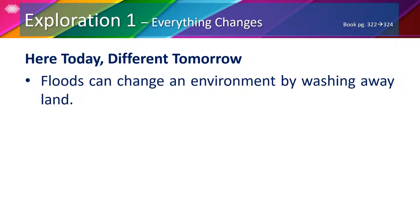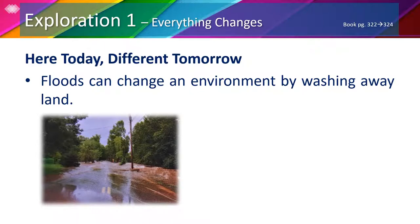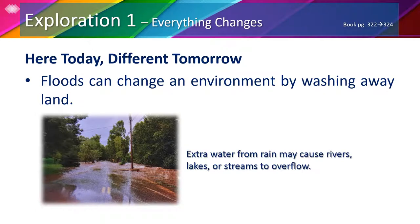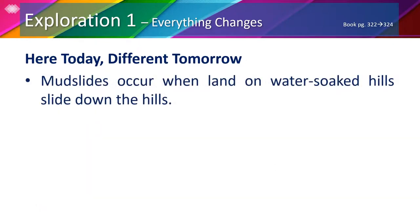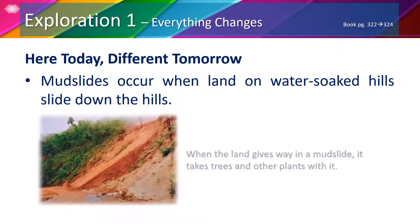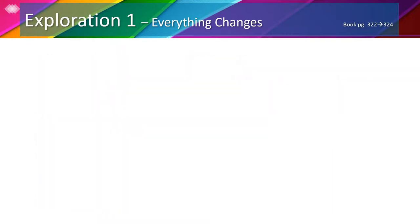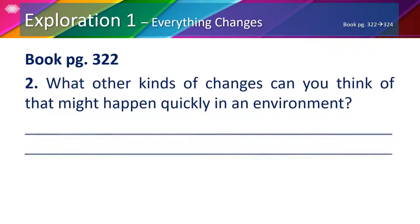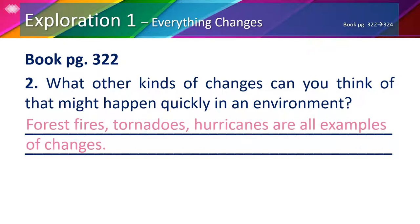Floods can change an environment by washing away land. In your book, page 322, we can see a picture of a road flooded with water. Extra water from rain may cause rivers, lakes, or streams to overflow. Mudslides occur when land on water-soaked hills slides down the hills. When the land gives way in a mudslide, it takes trees and other plants and animals that live there. Other kinds of changes that might happen quickly in an environment include forest fires, tornadoes, and hurricanes — these are all examples of changes.